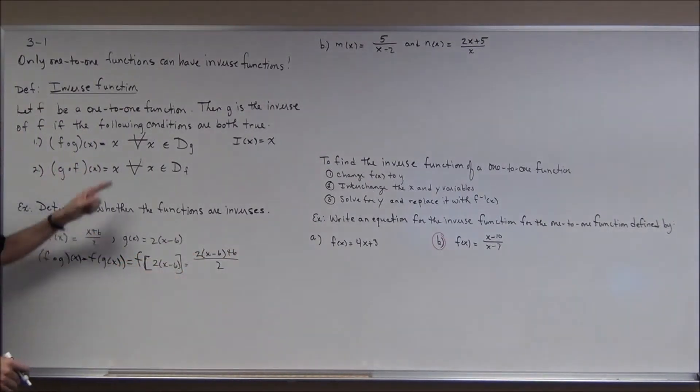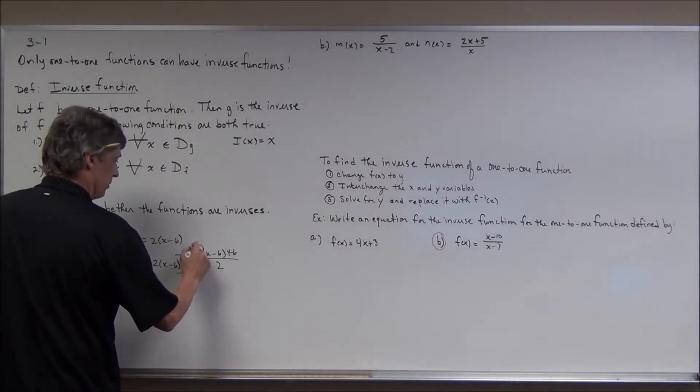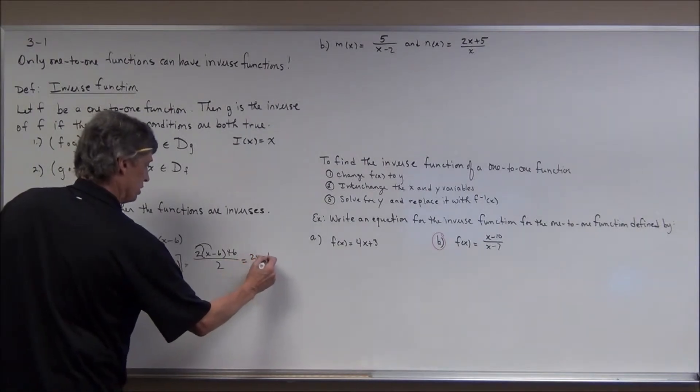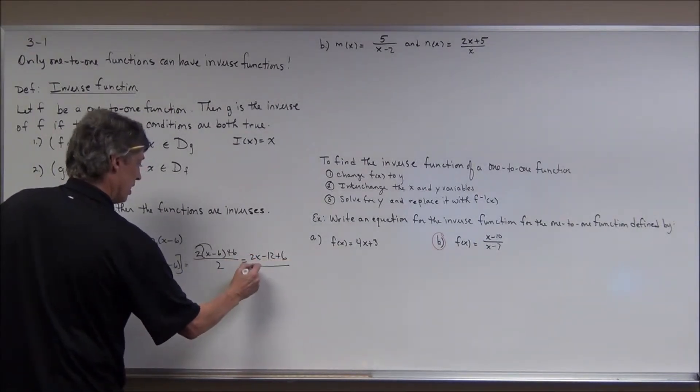Now if this mess turns out to equal x, I'm well on my way. So let's see what I get here. I distribute. I get two x minus twelve plus six, all over two.